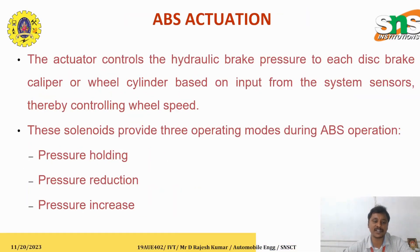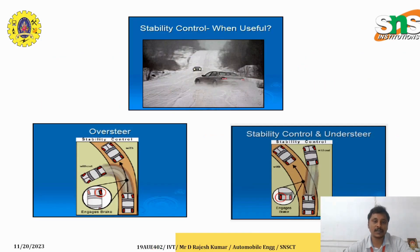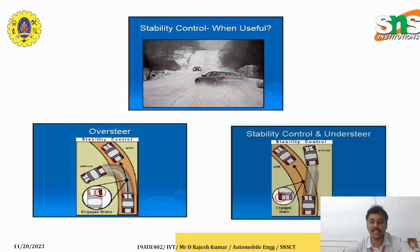There are three actuation modes: pressure hold, pressure reduction, and pressure release. There are also two important concepts — oversteer and understeer — both of which can be controlled by ABS. Oversteer is when the vehicle turns more than the desired direction, while understeer is when the vehicle is unable to steer in the desired direction and goes out of the path.